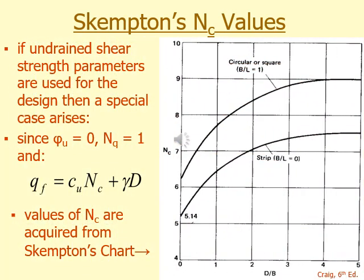Skempton's N values. If undrained shear strength parameters are used for the design, then a special case arises. Since phi U is equal to 0 and Nq is equal to 1, QF of the foundation, bearing capacity of the foundation: Cu into Nc plus gamma into D. Values of Nc are acquired from Skempton chart which is given. That is how it is calculated.